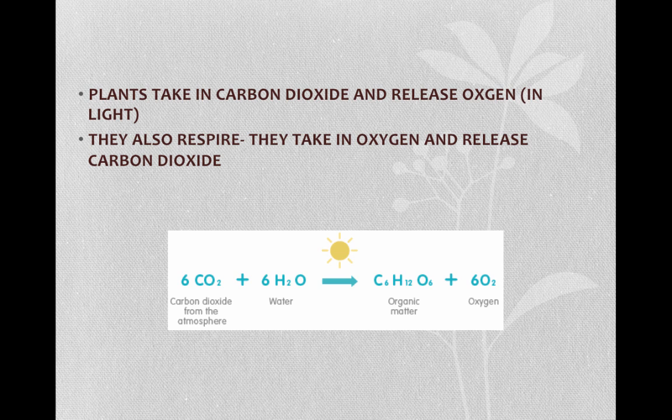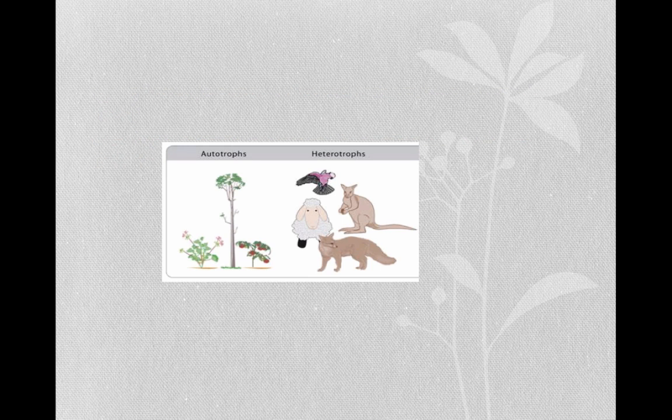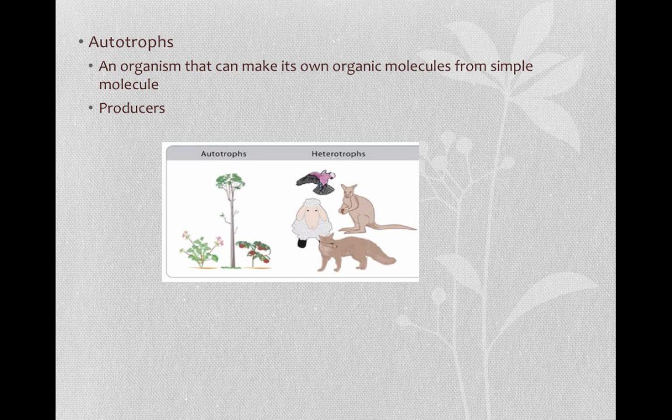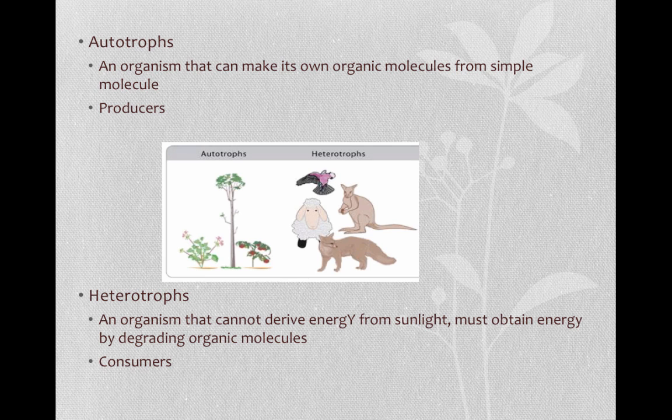They do photosynthesis in the light, and in the light and in the dark, they respire. The overall equation for photosynthesis is six carbon dioxide plus six water using the energy from sunlight produces glucose and six oxygens. Autotrophs are organisms that do photosynthesis. An autotroph is an organism that can make its own organic molecules from simple molecules. They are also called producers. Heterotrophs are organisms that cannot derive energy from sunlight. They must obtain their energy by degrading organic molecules. They are also called consumers.